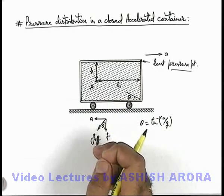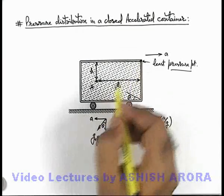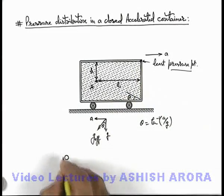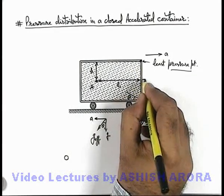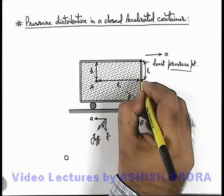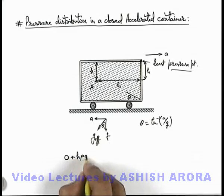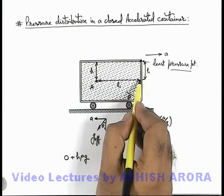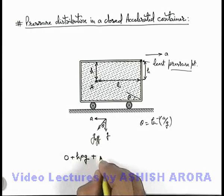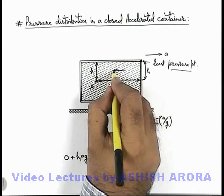But the best way out is successive increment in pressure. We can consider the least pressure point pressure will be zero. So if we wish to find out pressure at this point which is at a depth h below this point, we can say pressure at this point will be zero plus h rho g. And if we are having pressure at this point, pressure can be written as this plus l rho ay, as pseudo acceleration is acting in this direction.